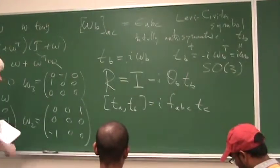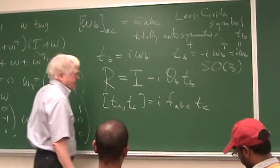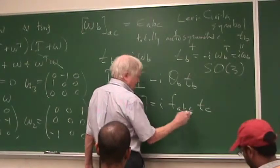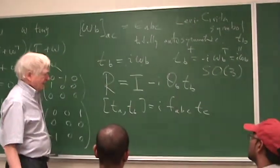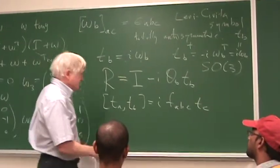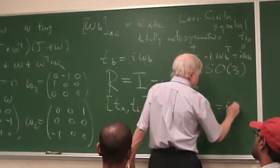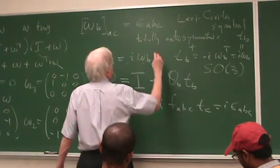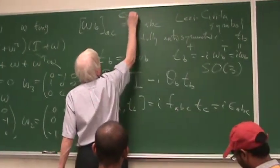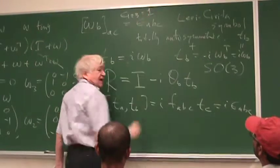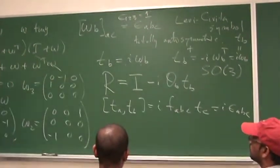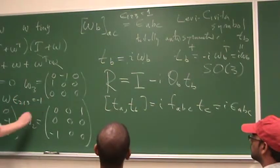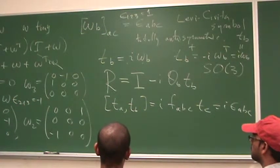We get this rule here. Since they're totally anti-symmetric, there's no point having the C up here, we can bring it down. And so, this thing is I epsilon_ABC. Epsilon_123 is equal to 1, and it's totally anti-symmetric, so you can figure out all the others. For example, epsilon_213 is minus 1.